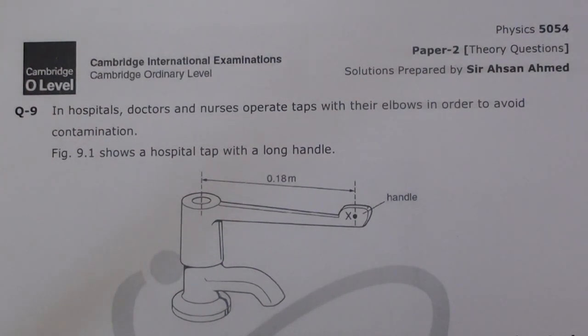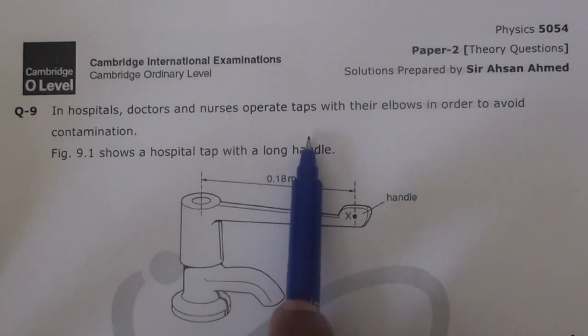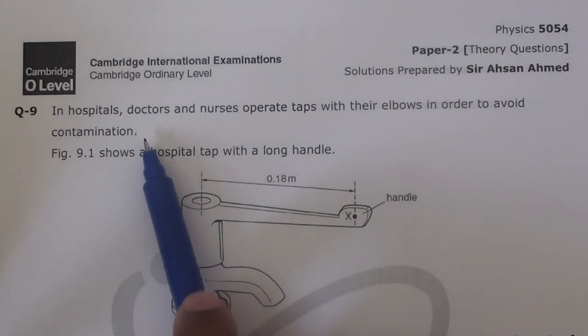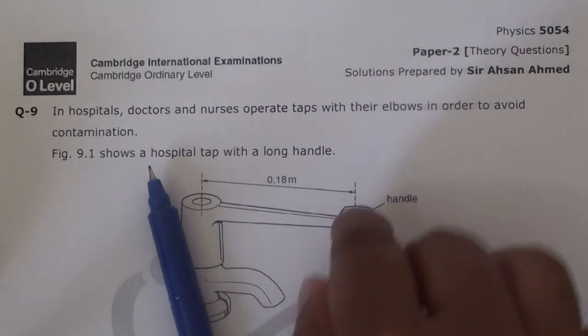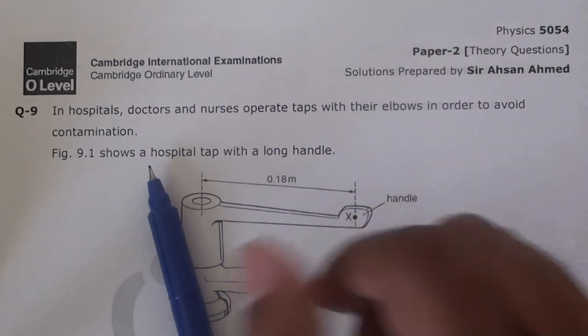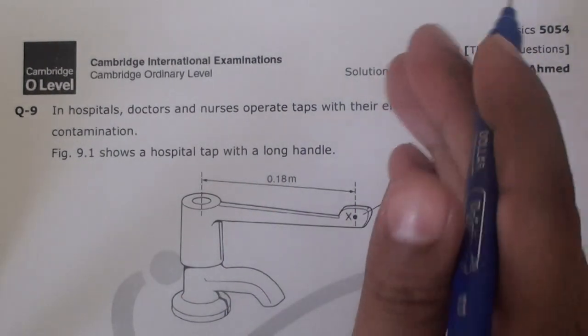Alright guys, another interesting question. In hospitals, doctors and nurses operate taps with their elbows in order to avoid contamination. So basically, due to opening this tap with hands, they use their elbows right, so that it doesn't get contaminated.